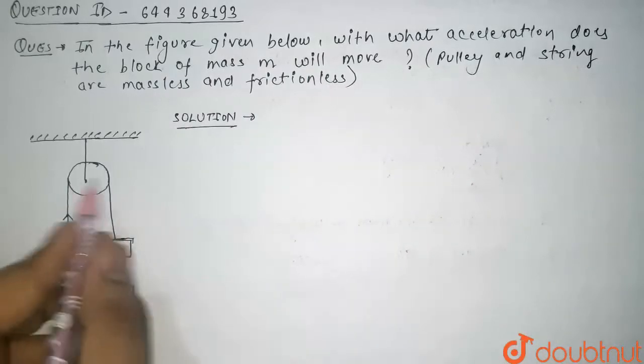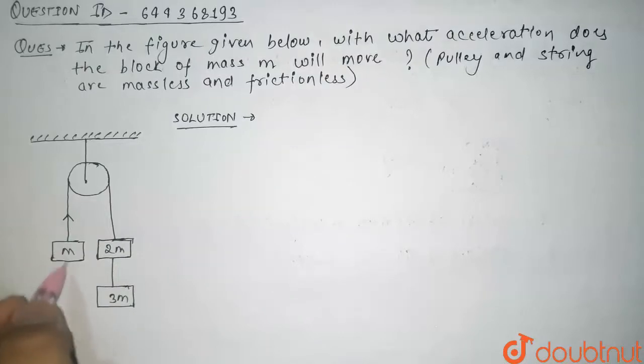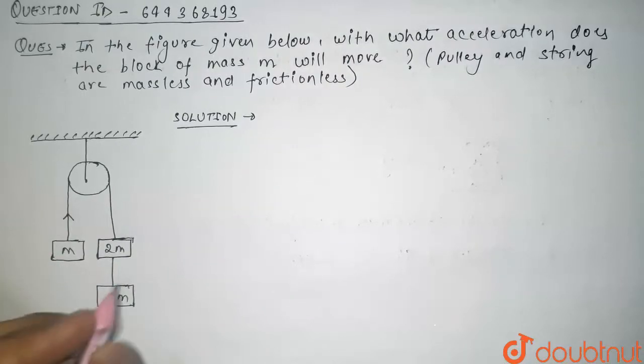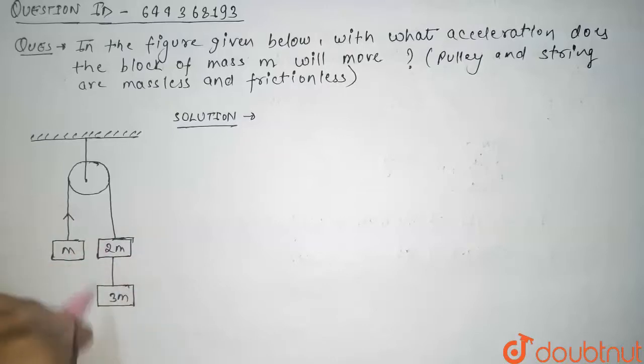So guys, see here, in this question we have been given a system of pulleys and masses and we have to find the acceleration of block of mass m, the acceleration of this block. In this question we will assume 2m mass and 3m mass as a single system.